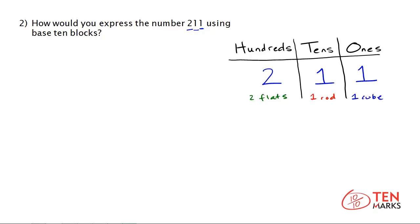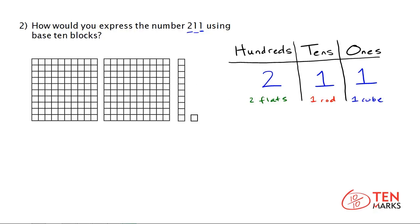Two flats, one rod, one cube. Let's see that visual. Here's the model for 211. There are one, two hundreds flats, and there is one tens rod, and one ones cube.